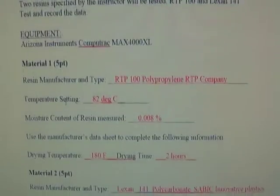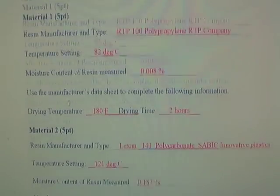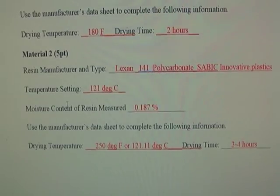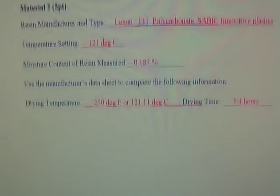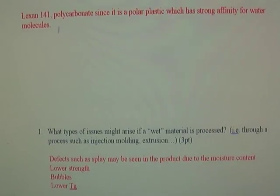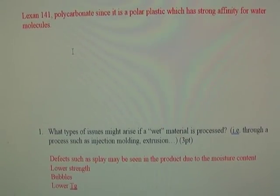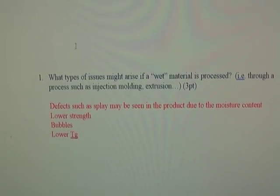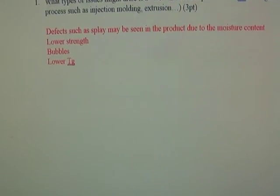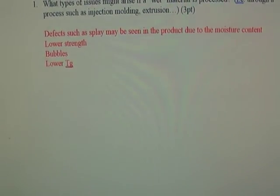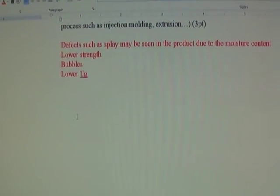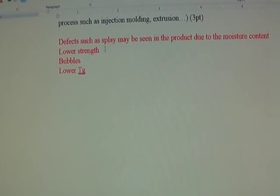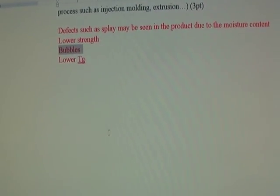The second question in Lab 2 was about moisture analysis. You can find relevant information on your data sheet. Make sure you know your testing procedures. Also, if you don't dry your materials before processing, you will have defects such as splay, lower strength, bubbles, and a lower glass transition temperature.